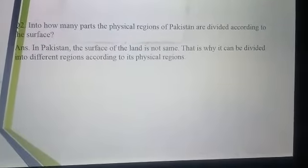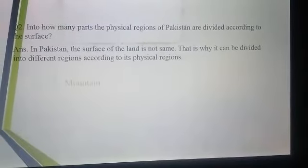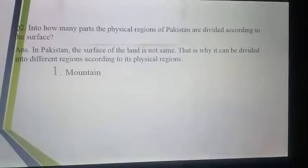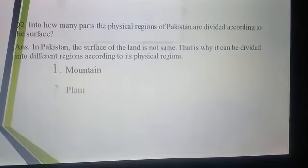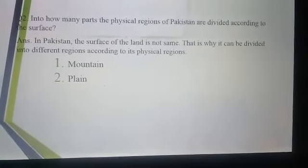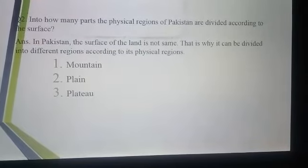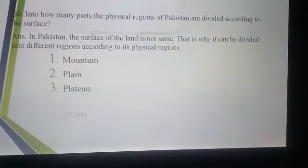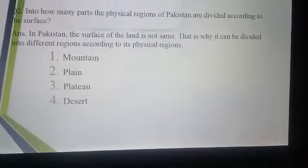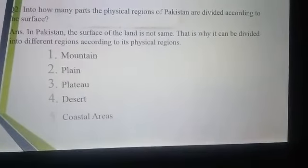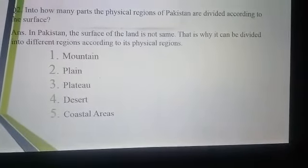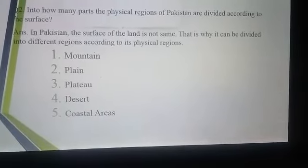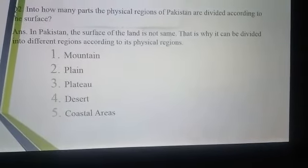Pakistan is divided into five physical regions. The first one is mountains (M-O-U-N-T-A-I-N). The second is plain (P-L-A-I-N). The third is plateau (P-L-A-T-E-A-U). The fourth is desert (D-E-S-E-R-T). And the fifth is coastal areas (C-O-A-S-T-A-L A-R-E-A-S). This is all for today's lecture, thank you.